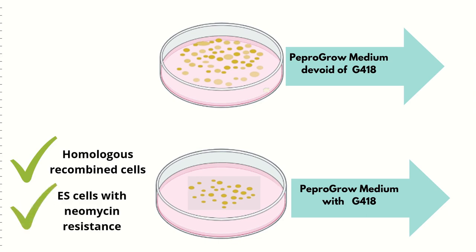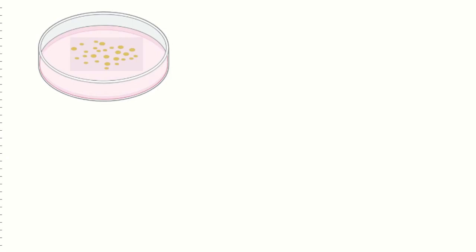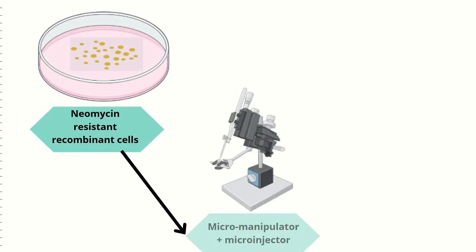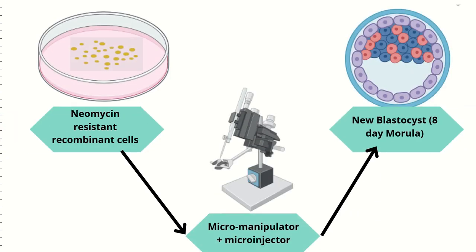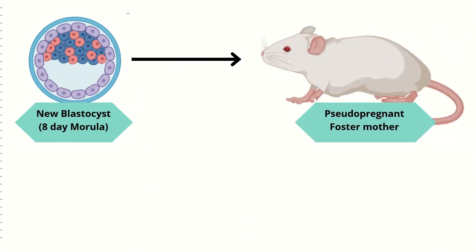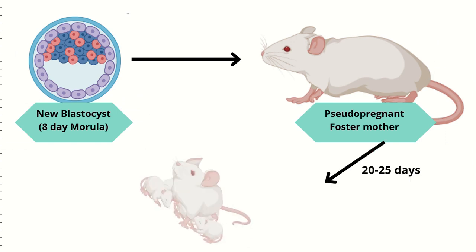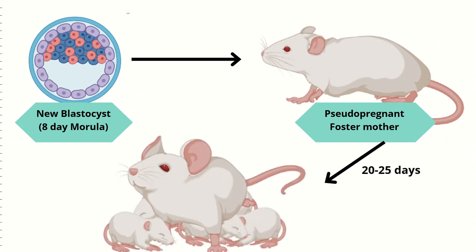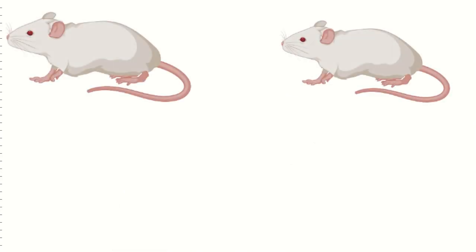These ES cells are then microinjected back into another 8-day morula using a microinjector. The new blastocyst or morula is then injected into a pseudopregnant foster mother mouse made receptive to the new blastocyst by mating with a vasectomized mouse. After 20–25 days post-implantation, the foster mother will give birth to transgenic mouse pups.